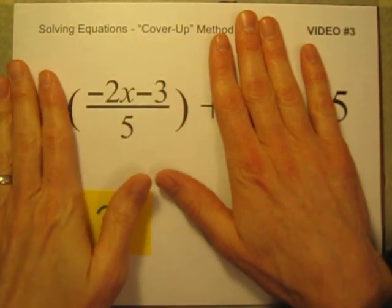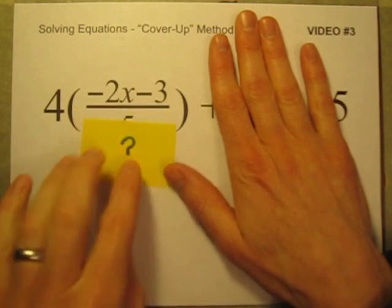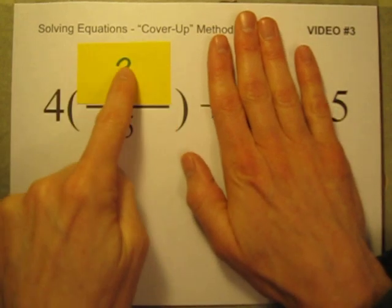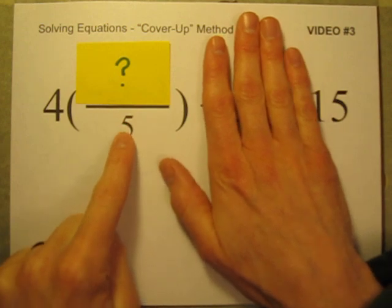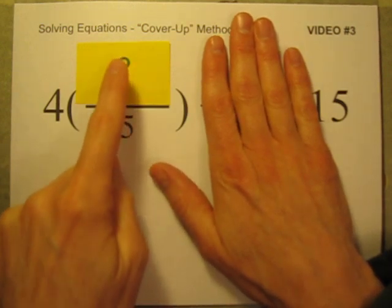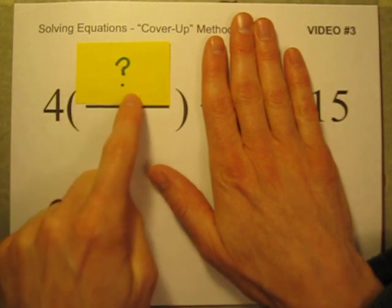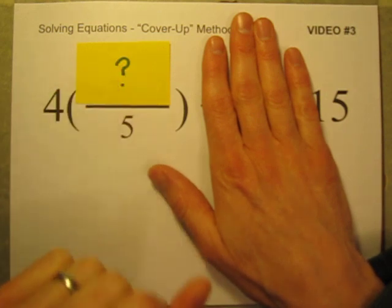So all of this is equal to 3. So this is a division problem. If I cover up this chunk on the top, what divided by 5 is equal to 3? What divided by 5 is 3? Well, 15 divided by 5 is 3.